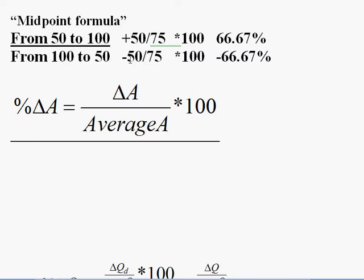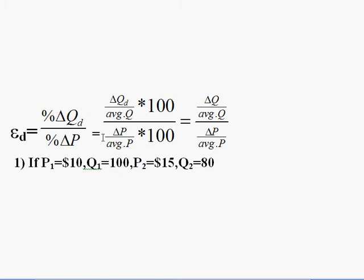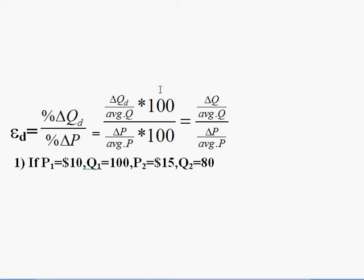Whether it's a percent change in quantity, price, income, or anything else, it's the change divided by the average times 100. The price elasticity of demand — sometimes written as epsilon with a d — equals percent change in quantity divided by percent change in price. Since both are multiplied by 100, those cancel, simplifying to: (change in Q / average Q) divided by (change in P / average P).